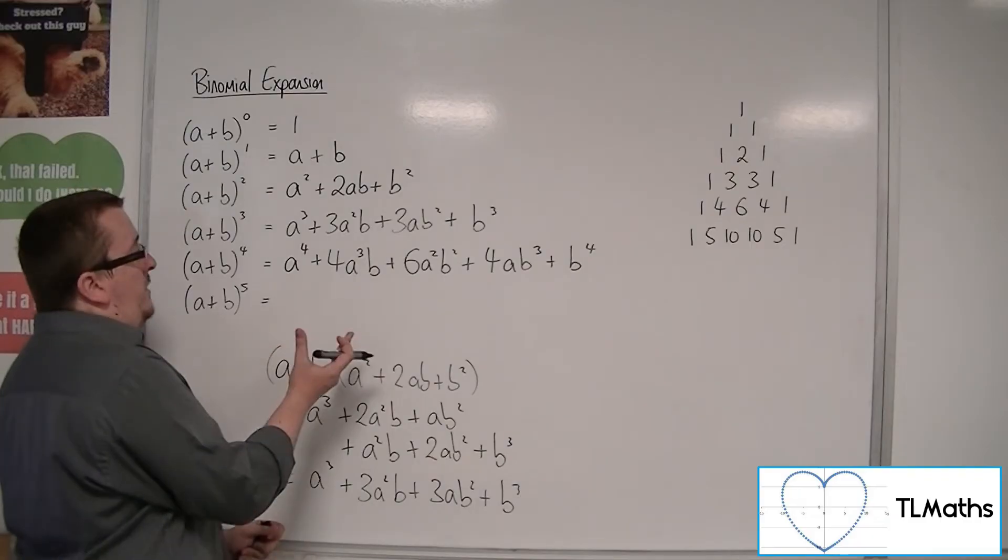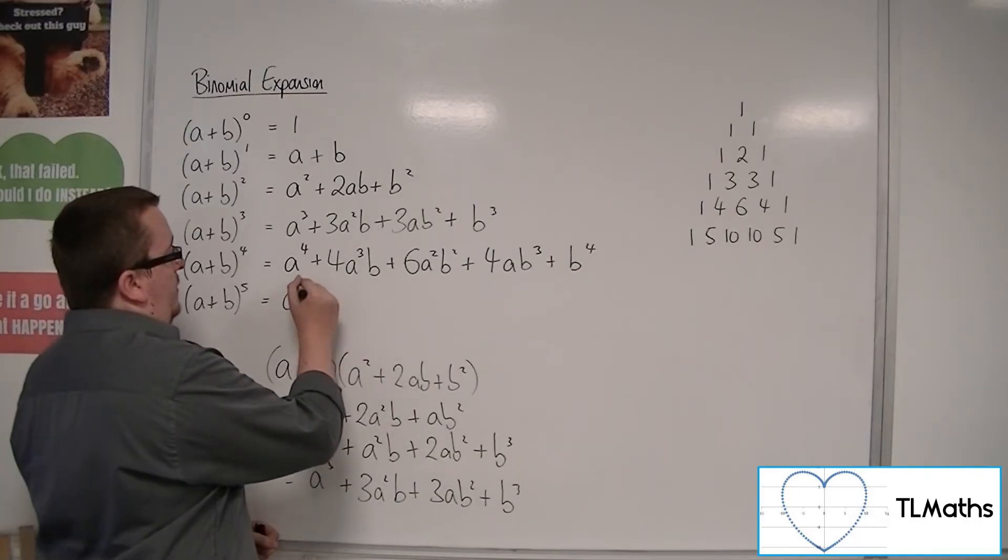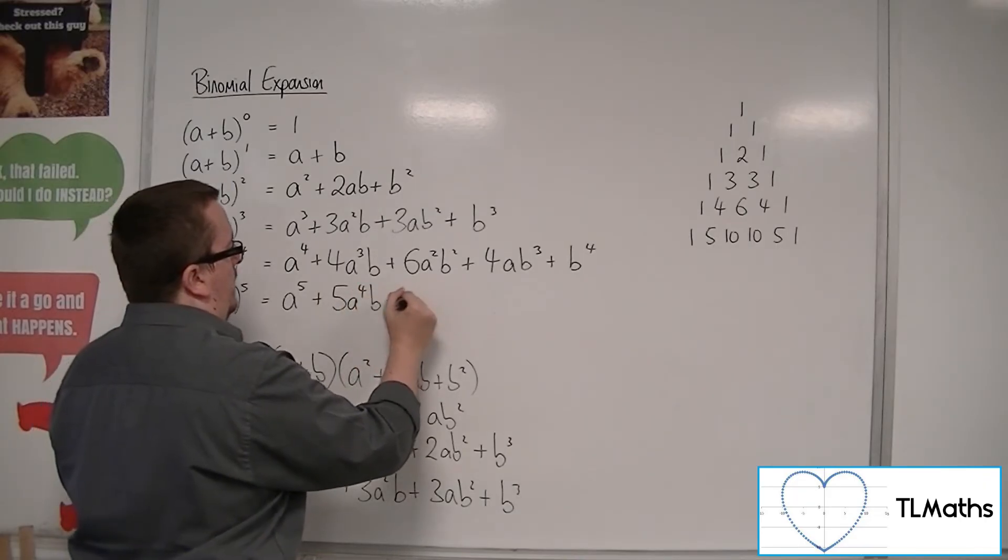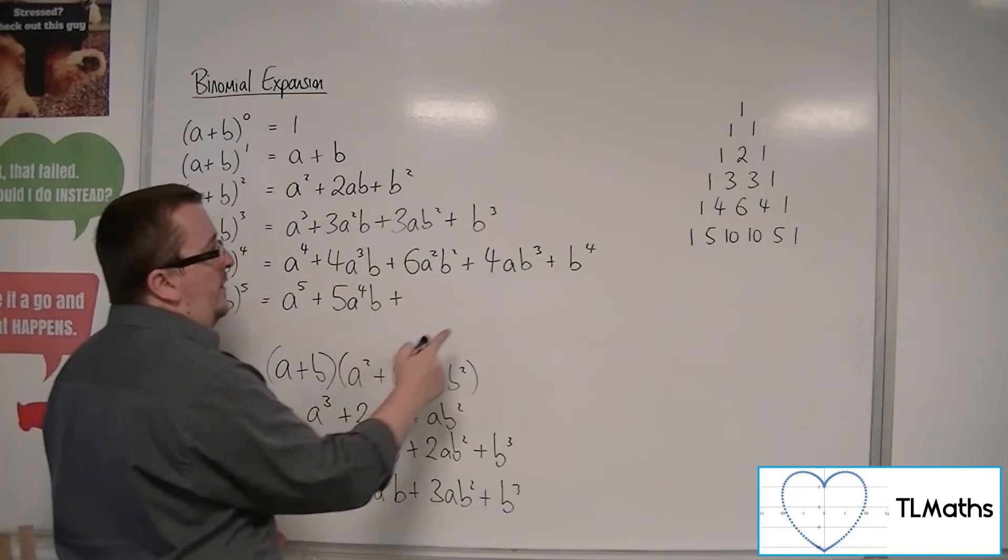Then A plus B to the 5 would be A to the 5 plus 5 A to the 4B. So A is reducing. B is increasing.